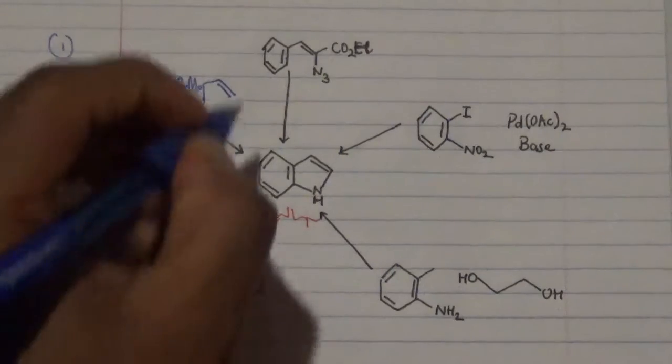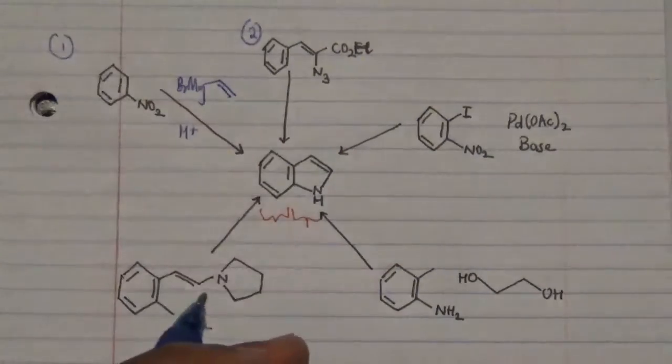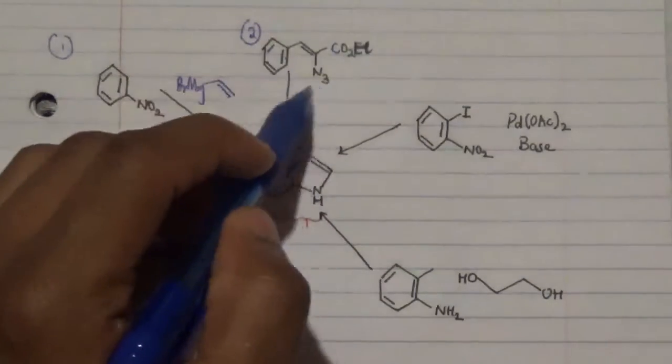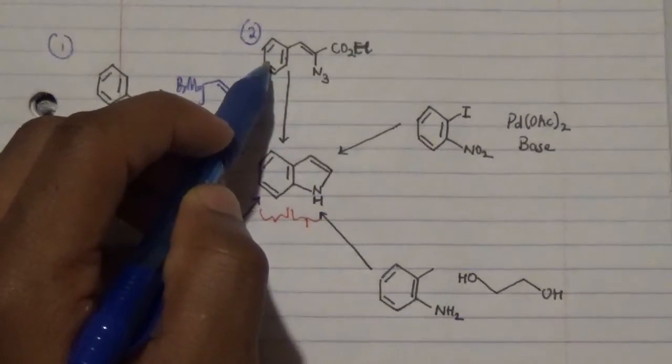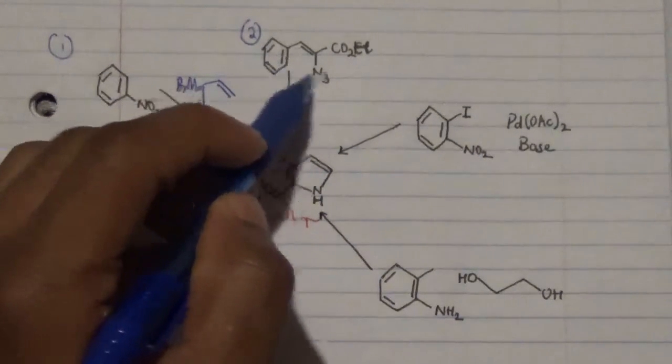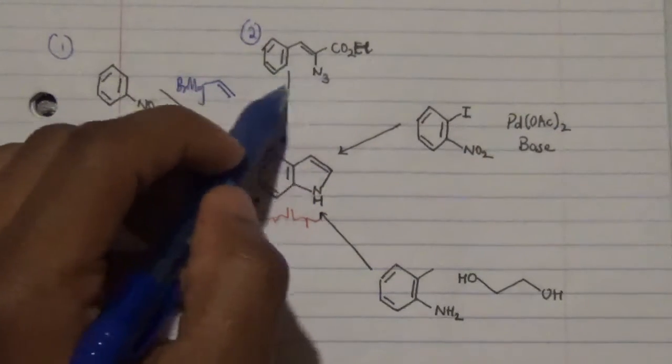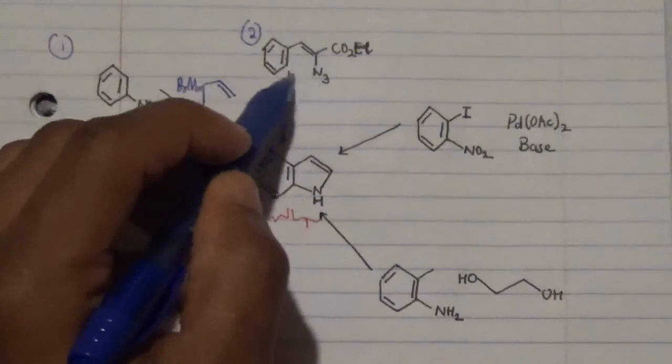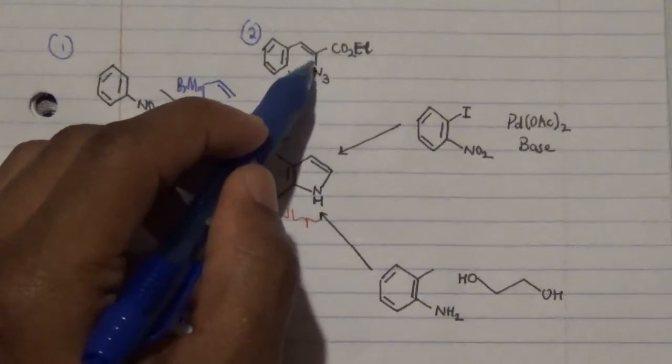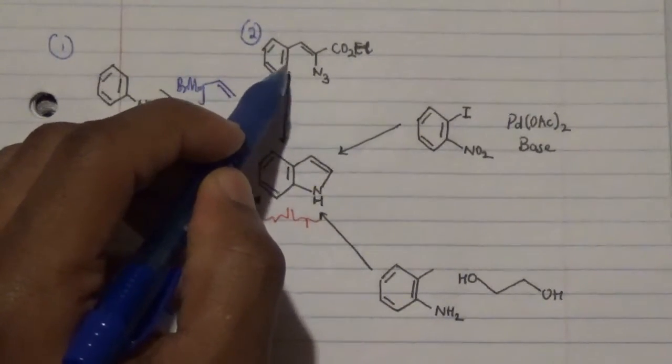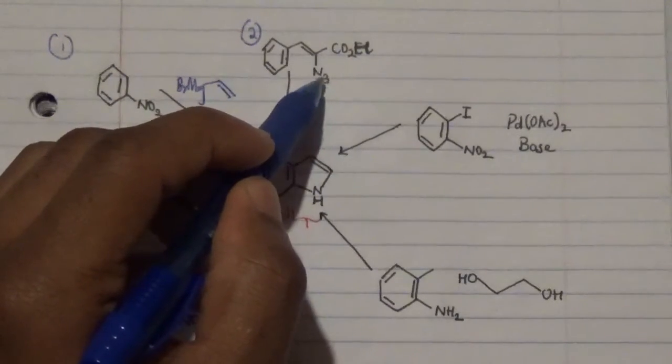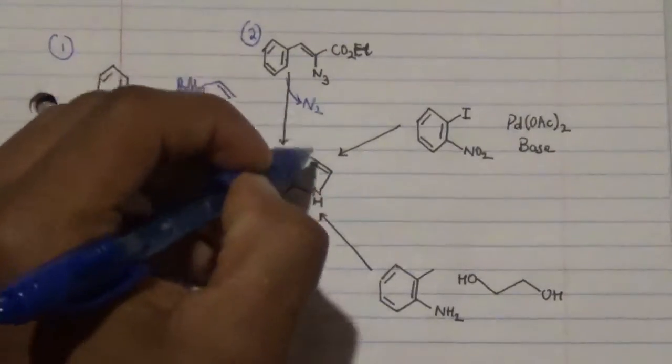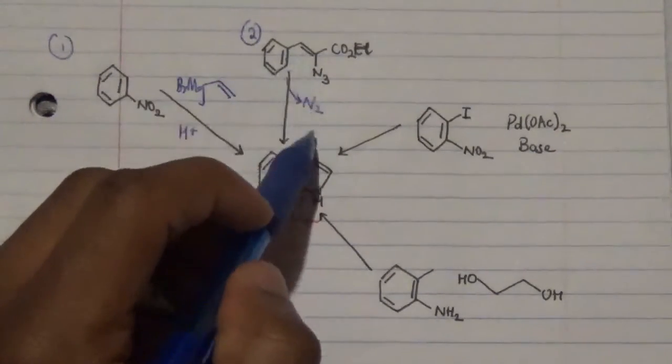The next step is number two. Number two possible way of forming this is by using this particular reagent, which is a Fischer indole azide. With this azide, you just have to heat it up. Once you heat it up, this will enhance the cyclization process between this nitrogen here and this particular carbon, therefore leading to the release of nitrogen gas N2, and then that will enhance the formation of this particular ring.